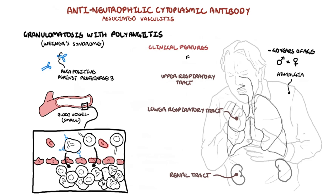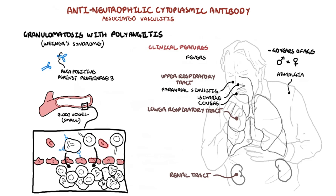Clinical features include the nonspecific findings of arthralgia, fevers, cough, and weight loss. Then you have the granulomatosis with polyangiitis triad involving the upper and lower respiratory tracts and kidneys. Upper respiratory tract findings are often severe and include paranasal sinus pain and drainage, and purulent or bloody nasal discharge. Nasal septal perforation may follow, leading to saddle nose deformity — a buzzword to remember.